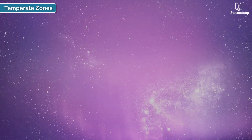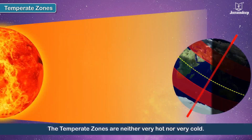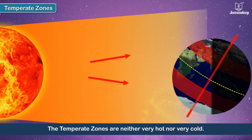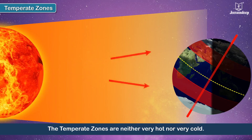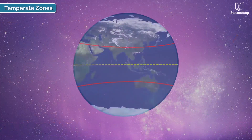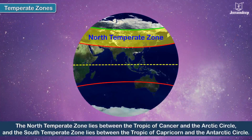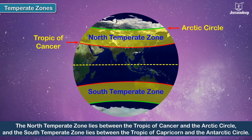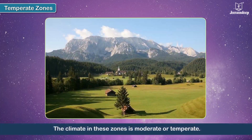The Temperate Zones receive slanting rays of the sun and are therefore neither very hot nor very cold. The North Temperate Zone lies between the Tropic of Cancer and the Arctic Circle, and the South Temperate Zone lies between the Tropic of Capricorn and the Antarctic Circle. The climate in these zones is moderate or temperate.